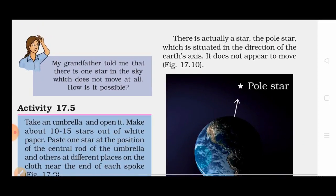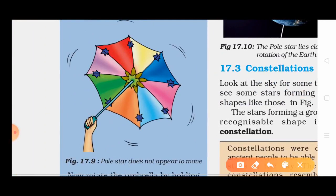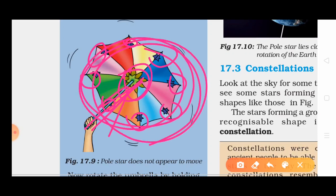My grandfather told me that there is one star in the sky which does not move at all. How is it possible? When we say stars are moving from east to west, let's look at an activity. If you put stars on an umbrella and rotate the umbrella, the stars will rotate, but the star at the tip will be fixed in its own place.